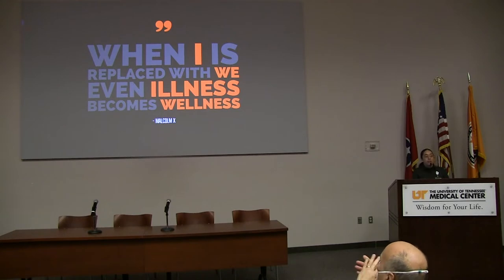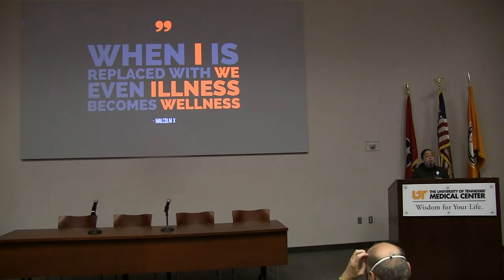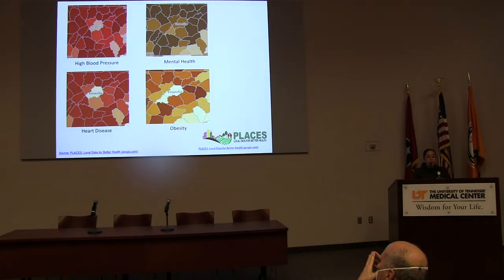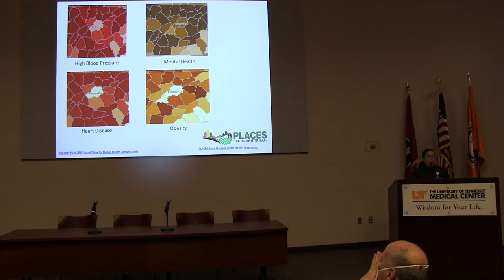There are so many different ways that we can understand the community — it could be our service area, which is 21 counties, a county, a city, a census tract, a zip code. I'd like to start by presenting some data from CDC PLACES, which allows you to understand health outcomes in our region. This is just a snapshot of the 21-county service area for UT Medical Center, and as you can see, there are very striking disparities. This is just four examples of health outcomes: high blood pressure, mental health, heart disease, and obesity.